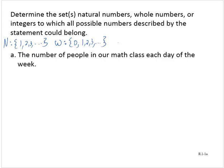The integers are the natural numbers, their opposites and 0. And so we often write them as dot, dot, dot, negative 3, negative 2, negative 1, 0, 1, 2, 3, dot, dot, dot. And of course, those dots, those ellipses, say that this pattern continues on forever.